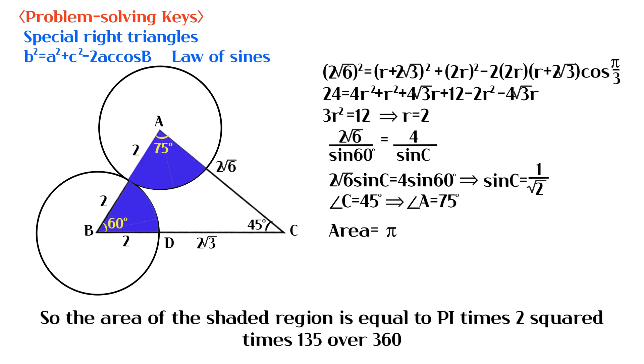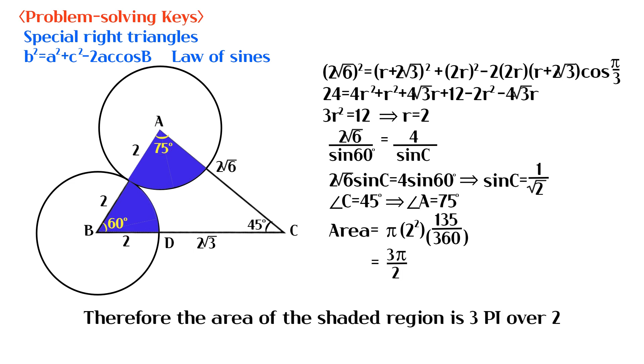So the area of the shaded region is equal to π times 2 squared times 135 over 360. Therefore, the area of the shaded region is 3π/2.